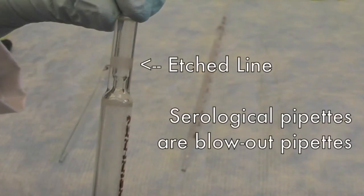Along with the edged line, serological pipette can be identified as blowout type. It indicates that the last drop of liquid has to be dispensed from the pipette for accurate volume delivery.